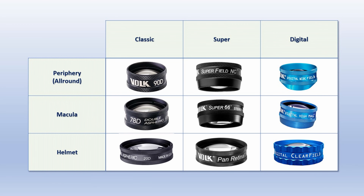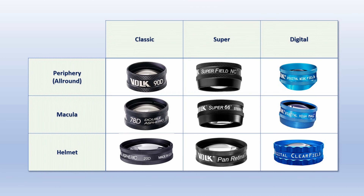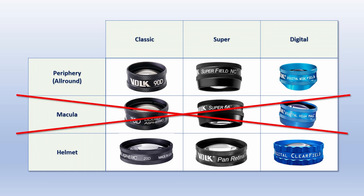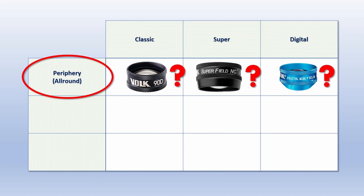So which one of these nine lenses should you actually get in your first year of residency? For helmet lenses, get the 20D — the Clear Field is much more expensive and for how little I use it I don't see any benefit. For macular lenses, my suggestion as a first-year resident is don't get any of them. Get a good all-round lens, and only if you're frustrated and can't see enough macular detail should you switch to a macular lens. Even though I put the all-round lenses in the same category, they are not at all the same — there are three factors that distinguish them.